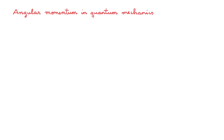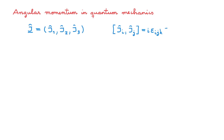Let's start with a refresher of general angular momentum in quantum mechanics. Consider an operator j made of three components j1, j2, and j3. If these three components obey these commutation relations, then we call j an angular momentum. As a quick reminder, this is the Levi-Civita symbol and I'm using Einstein notation, so this expression implies a sum over the repeated indices k.